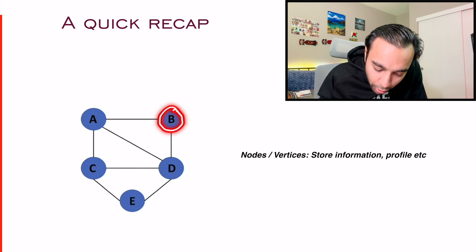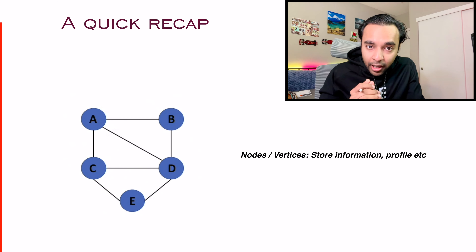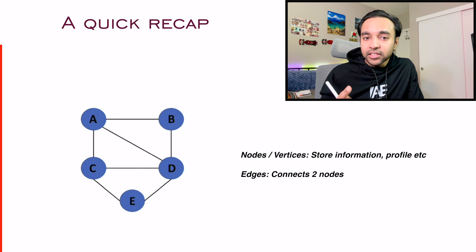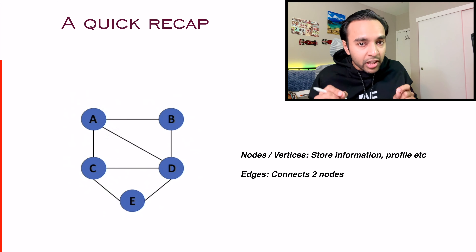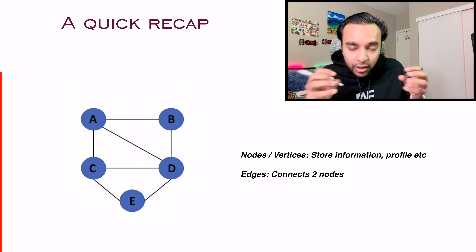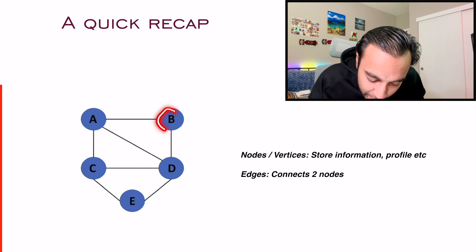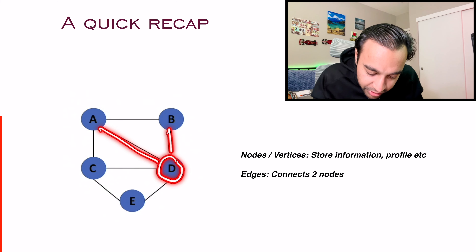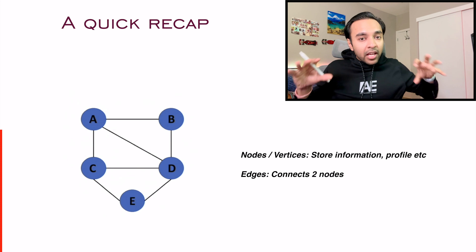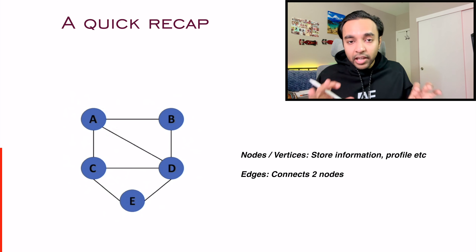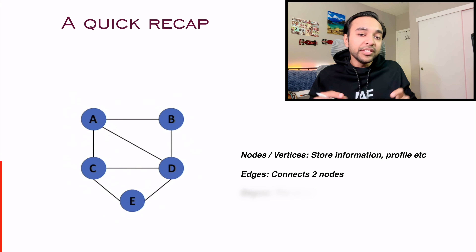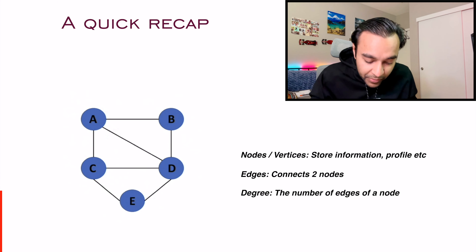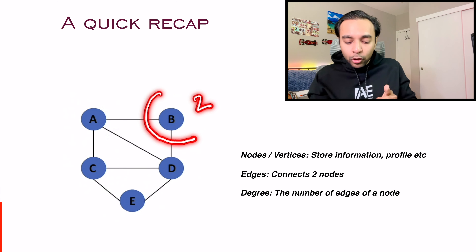Doing a quick recap — what all do we know about graphs so far? A typical graph has nodes or vertices which hold all of your data, and then you have edges. Each edge connects two vertices. In a graph there is no limit on how many edges connect to a vertex. For example, one particular vertex might have two edges connected to it, and another might have four edges. You can connect any number of nodes with any number of nodes.